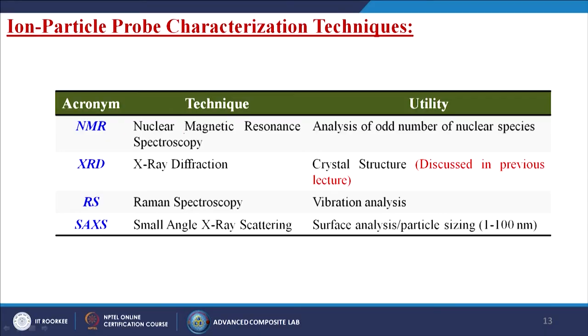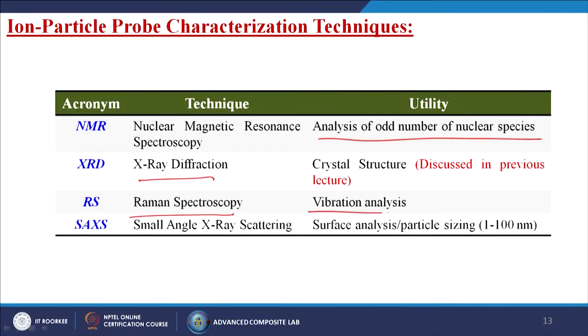Next are the ion particle probe characterization techniques. There are four types: NMR, nuclear magnetic resonance spectroscopy, used for analysis of odd-number nuclear species; XRD, X-ray diffraction, for crystal structure (discussed in a previous lecture); RS, Raman spectroscopy, for vibration analysis; and SAXS, small angle X-ray scattering, for surface analysis and particle sizing generally from 1 to 100 nanometers.